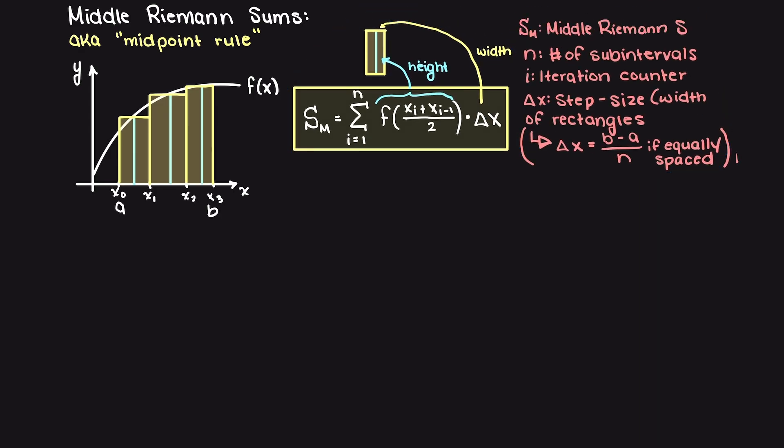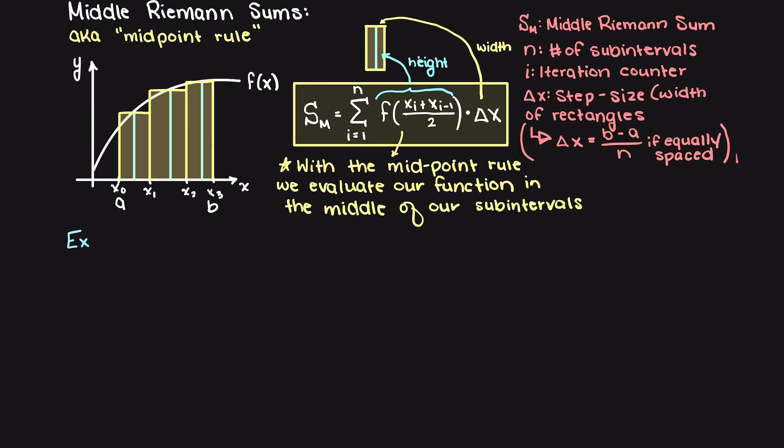Writing out our general middle Riemann sum formula, you can see that we are now using the midpoint, so xi plus xi minus 1 divided by 2.